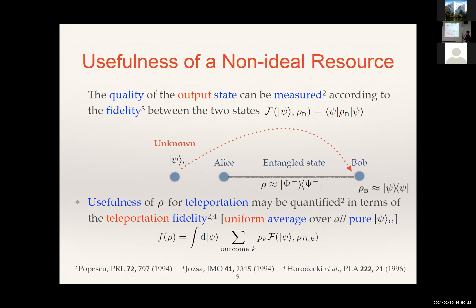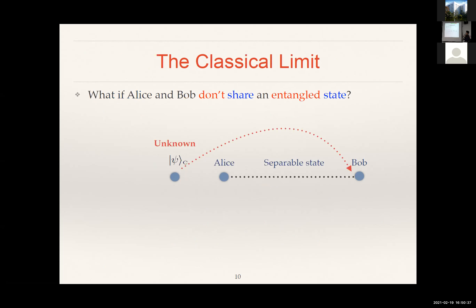So that gives us a handle to think about this shared state when we wanted to use it as a resource for performing teleportation — how good it is doing its job. In the extreme scenario, you can imagine that Alice and Bob maybe don't even share entanglement. Then maybe they share some separable states. And in fact, if they only share separable states, they might as well not share anything, because with LOCC they can just prepare that from scratch.